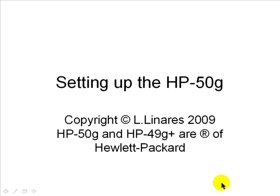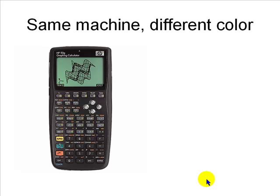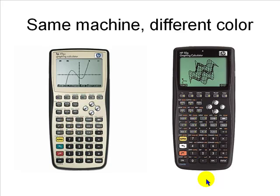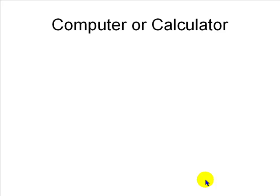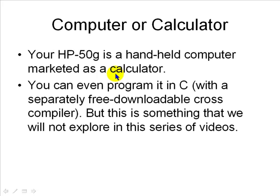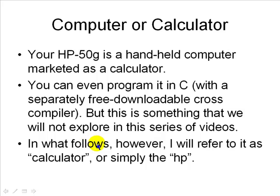We have already set up the HP 50G in another video. The HP 50G and the HP 49G Plus are the same machine from the point of the user — same keys, same functionality. The difference is different colors. Your HP 50G is a handheld computer that's been marketed as a calculator. You can even program it in C if you want to. In what follows, however, I will refer to it simply as the calculator or the HP.